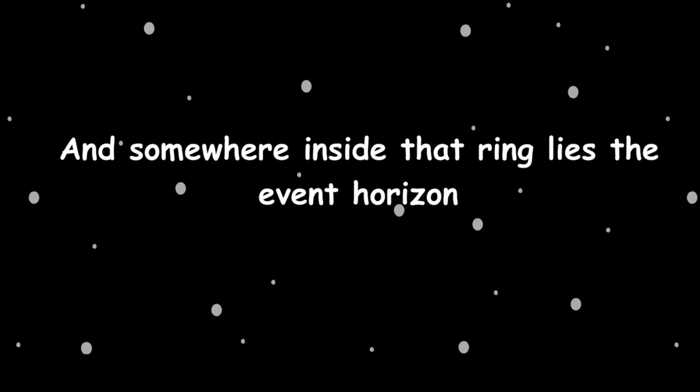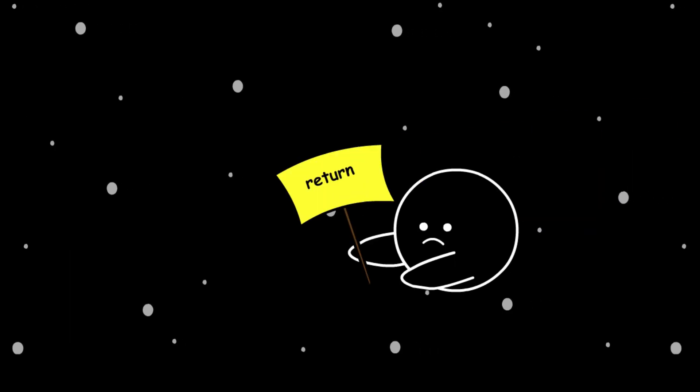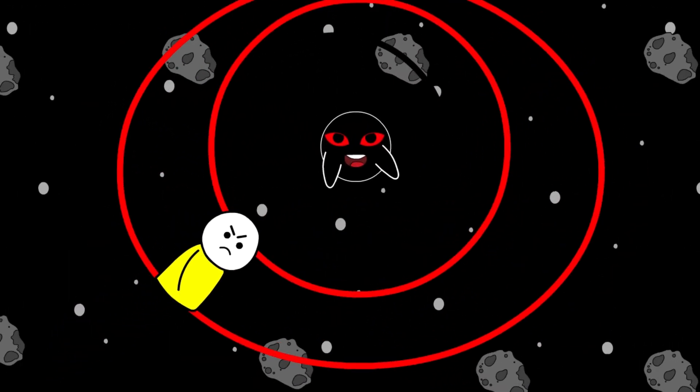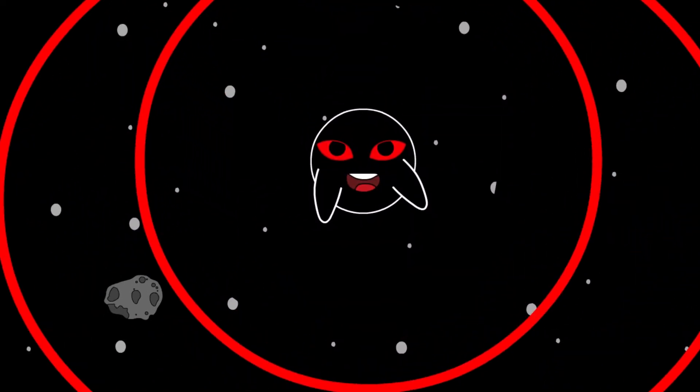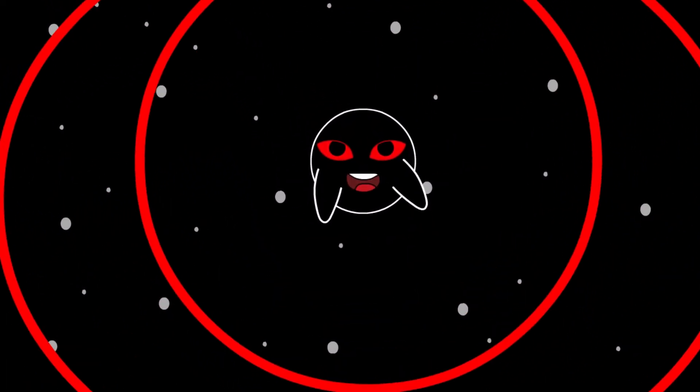The light bends around it, twisted by gravity until it forms a fiery ring—beautiful, horrifying. And somewhere inside that ring lies the event horizon, the point of no return. Once you cross that invisible boundary, there's no escaping—not you, not light, not even information. Everything that passes that line is gone from our universe forever.